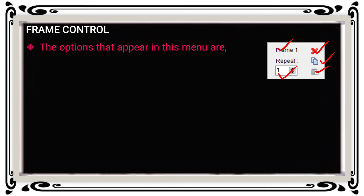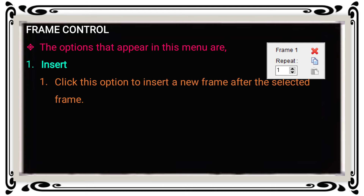There are five options available in the frame control: Insert, Delete, Copy, Paste Insert, and Repeat. The first option is Insert — click this option to insert a new frame after the selected frame. You can use this insert option to add one more frame at another time.